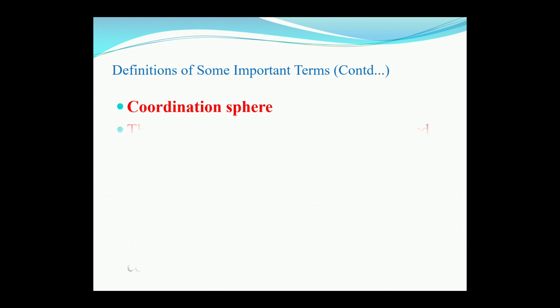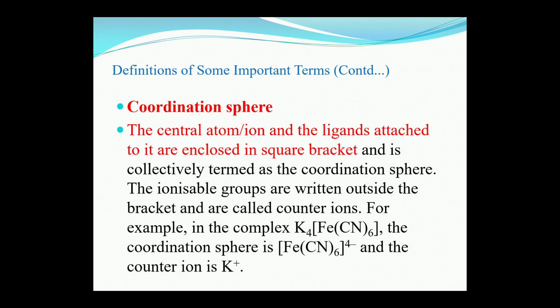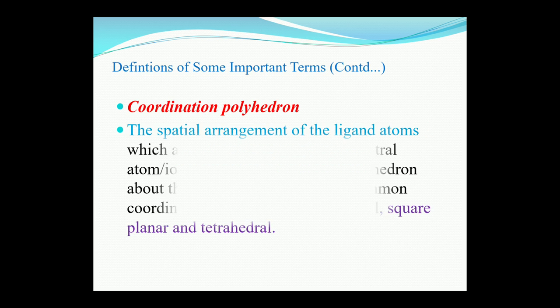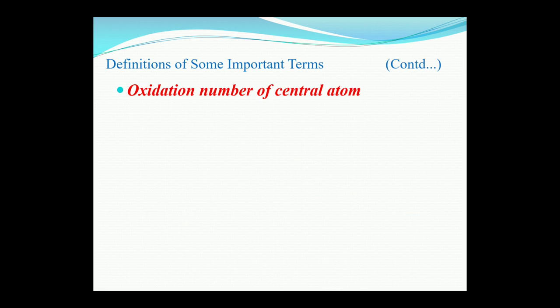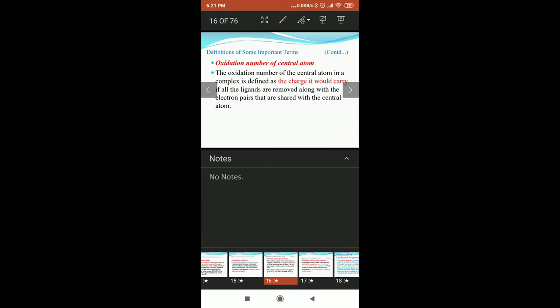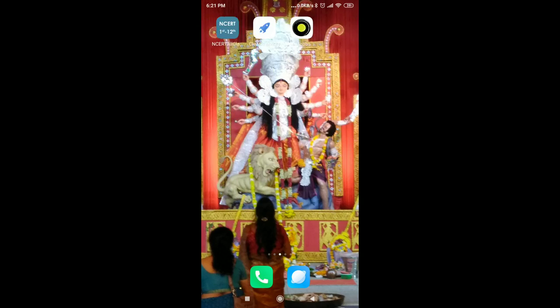This is the last slide for today's video. The next topic is the coordination sphere. The central atom or ion and the ligands attached to it are enclosed in a square bracket and are collectively termed the coordination sphere. The ionizable groups written outside the bracket are called counter ions. For example, in potassium hexachloroplatinate, the coordination sphere is [FeCN₆], and the counter ion is the potassium ion. In the next video, I will upload more topics on coordination polyhedron and oxidation number. Please keep watching all my videos.